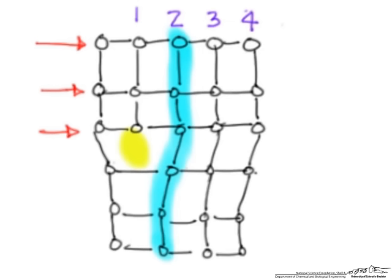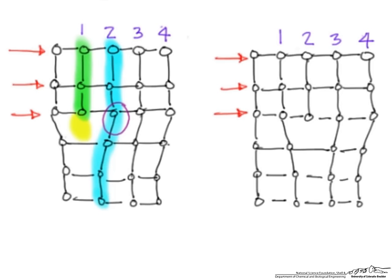start to stretch and then eventually break. Once they break, we have a situation where these bonds are going to actually break and reform, allowing plane number one to have a full plane.